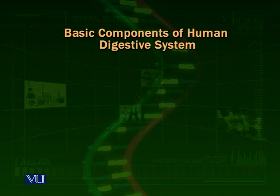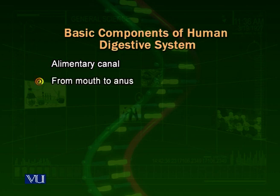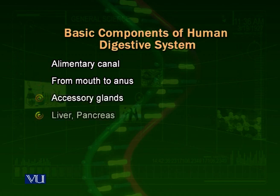Now we talk about the basic components of the human digestive system. The human digestive system consists of an alimentary canal, which starts from the mouth to the anus. It is also associated with certain accessory glands — for example, the liver and pancreas — which pour certain secretions inside the digestive tract to help in the digestion of the food.